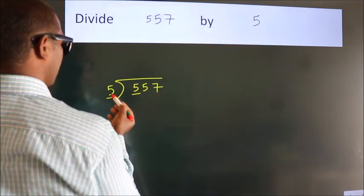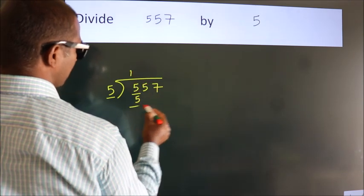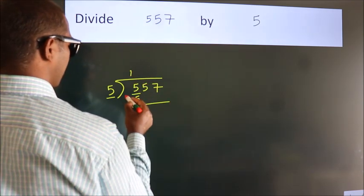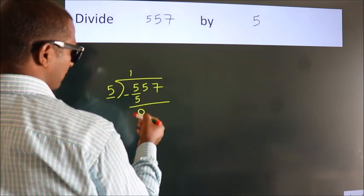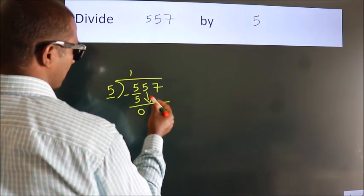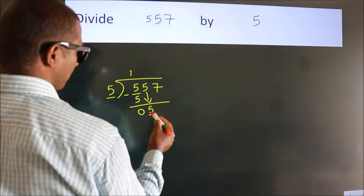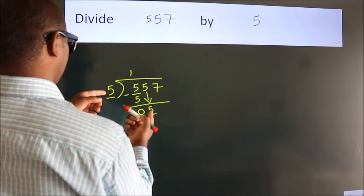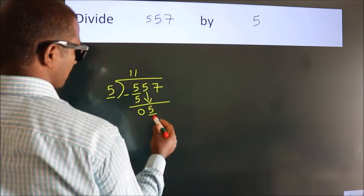Five once five — in the five times table, five once is five. Now we subtract and get zero. After this, bring down the beside number. So five comes down. Five once five again.